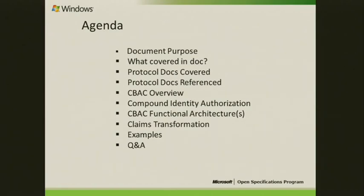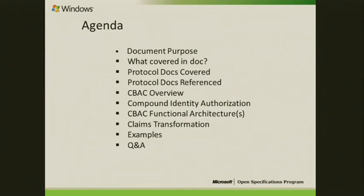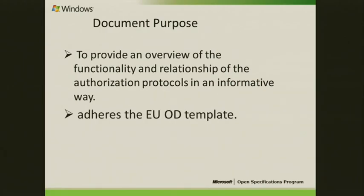The agenda of this session covers the purpose of the document at a high level, what protocol docs are covered in this document, and what protocol docs are referenced from this document. I'll give a little overview on CBAC in terms of the protocol, talk about the new identity concept — compound identity — and cover scenarios: when the entire environment is Windows 8, what protocols are involved; if a down-level client is trying to connect to a file share, what protocols are involved; how this infrastructure works; client transformation as ELISA discussed; and client definitions specific to the forest. If an authentication request is coming to a different forest, what rules are applied, with examples in terms of file access protocols.